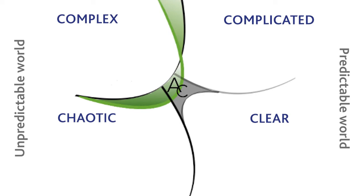At the centre of the framework is AC, or aware and confused — the state of not knowing what domain you're in. I can be aware that I am confused and I don't know, or I can be confused and not know it, which is not advised. We all start from this position of aware and confused, even if momentarily, wondering where we are and what to do.